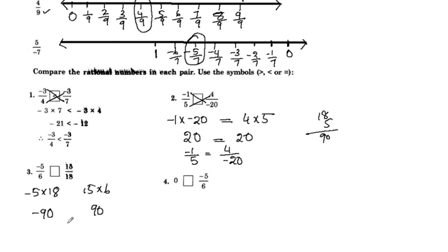One negative and one positive: the negative is less. So negative 5 by 6 is less. If we add 0, then 0 is greater than negative 5 by 6.